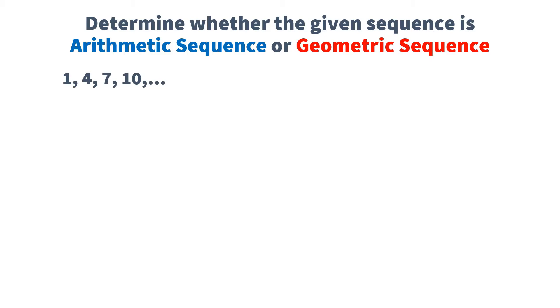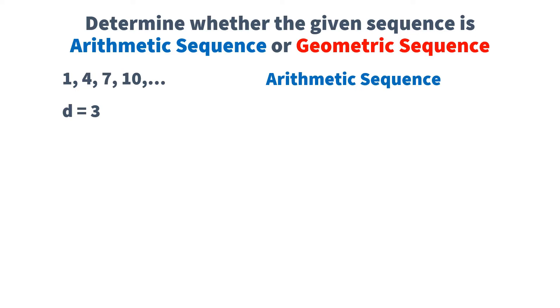So let's check. 1, 4, 7, 10, and so on. Since you are adding 3 on the terms of this sequence, then you can say that the common difference is 3, then this is an arithmetic sequence.